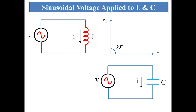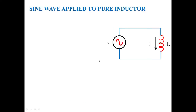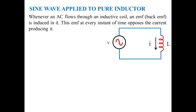In phasor representation, for an inductive network the voltage will lead current, whereas for a capacitive network the current will lead voltage. When a sine wave is applied to a pure inductor, the current flows through the inductive coil and an EMF, known as back EMF, is induced in it. This EMF at every instant of time opposes the current producing it, so a voltage is developed across this inductor that at every instant opposes the current.